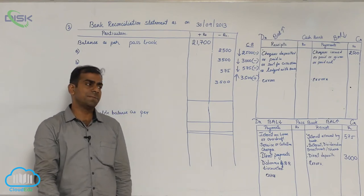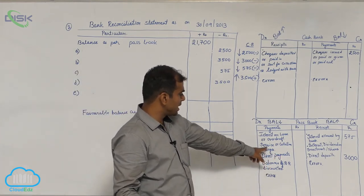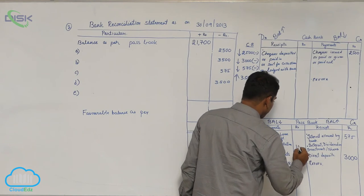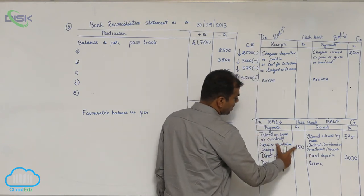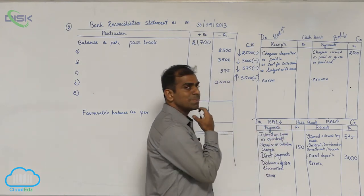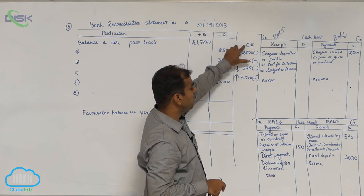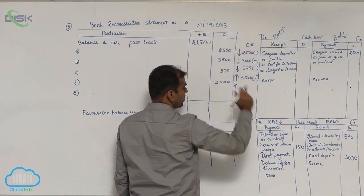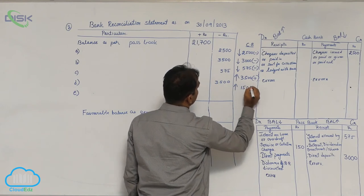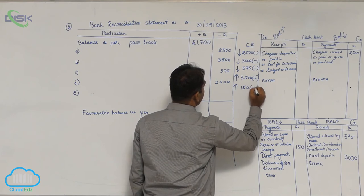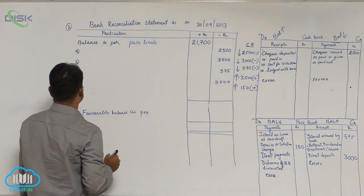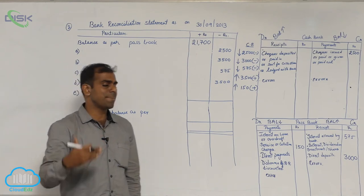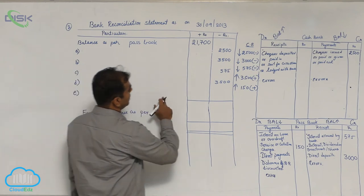The last statement: bank charges 150. Bank charges — look into the format — it is nothing but service charges. Enter this amount on the debit side of the pass book. When you enter on the debit side of the pass book, pass book balance will come down. Our target is cash book, so the opposite effect applies — if pass book balance is coming down, cash book balance will go up. So add 150. Write: bank charges recorded in pass book, or bank charges not recorded in cash book — add 150.